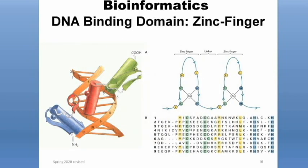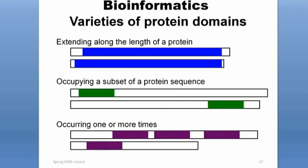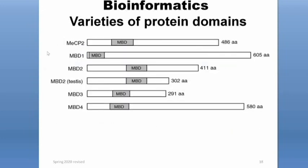Another example is a DNA binding domain — the zinc finger. This zinc finger domain is used for binding onto DNA and holding it apart. You can see the consensus in yellow, green, and blue showing the amino acids that play a role in holding the DNA. Protein domains can extend for the full length of a protein, occupy certain subsets of the protein sequence, and can also occur more than one time. Here are multiple proteins sharing an NVD domain, and as you can tell, this domain can appear in really different proteins.